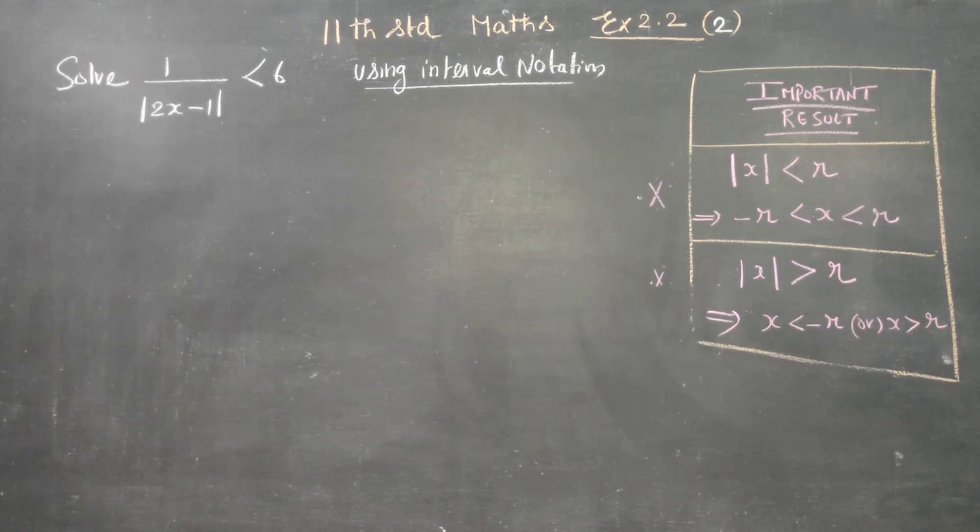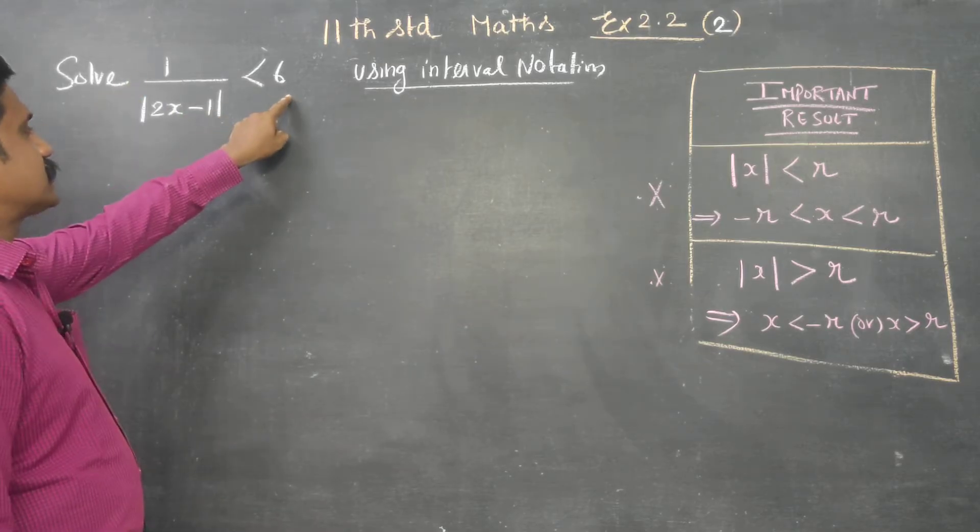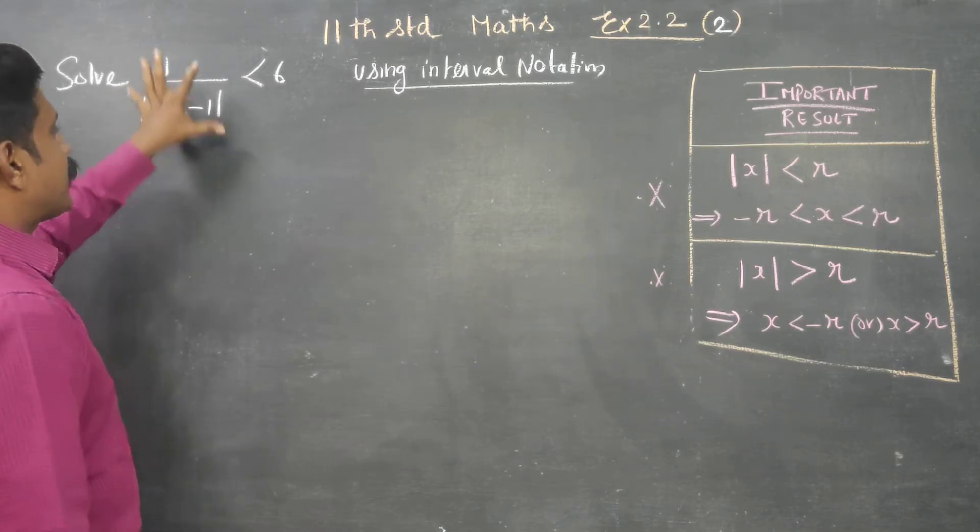Dear 11th standard students, in exercise number 2.2 sum number 2, we have 1 divided by |2x-1| is less than 6. This is called absolute value inequalities.